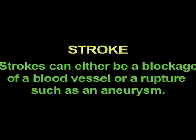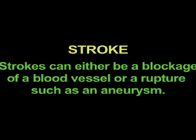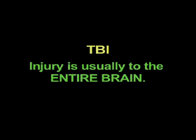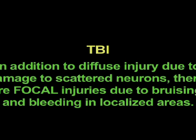In a rupture type of stroke, blood is released into the brain. In a traumatic brain injury, the injury usually occurs to the entire brain — it can be diffuse and global. In addition to the diffuse injury, you can have damage to scattered neurons, and there are also focal injuries due to bruising and bleeding in localized areas.